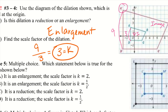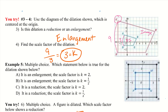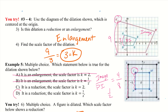Example 5 is multiple choice: which statement is true for the dilation shown? I notice the prime marks are on the smaller figure, so this is definitely a reduction — it can't be A or B. For the scale factor, image over pre-image: my image side is 4, and my pre-image side is 8, so that gives 4 over 8, which reduces to 1 half. K equals 1 half, which makes sense because a reduction must have a scale factor less than 1.